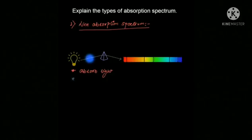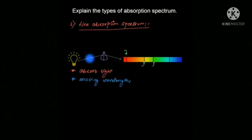Because some wavelengths are missing from the spectrum, we get a few dark lines on a bright background. These dark lines correspond to the wavelengths absorbed by the gas sample, and this spectrum is called the line absorption spectrum.